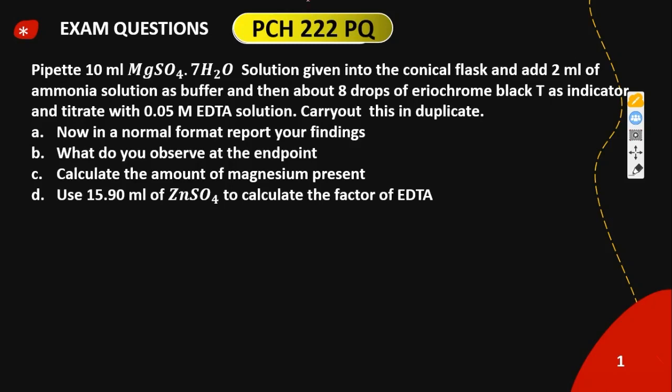We have the exam question on PCH-222, the practical question. The question says: prepare 10 ml magnesium sulfate heptahydrate solution given into the conical flask, add 2 ml of ammonium solution as buffer, then about 8 drops of Eriochrome Black T as indicator, and titrate with 0.05 molar EDTA solution. Carry this out in duplicate, and report your findings in normal format — date, title, aim, and introduction.